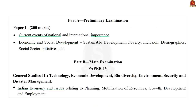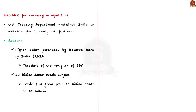The syllabus relevant for this article is highlighted below. The US Treasury Department had recently retained India on a watch list for currency manipulators. India was added to this list last year, and the reason cited by the US Congress was the higher dollar purchases which was found to be close to 5% of GDP by the Reserve Bank of India. The US threshold for dollar purchases is only 2% of GDP, but India purchased almost 5% of GDP worth of dollars.